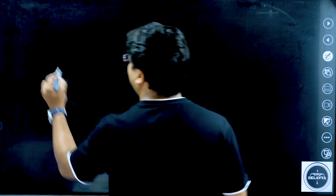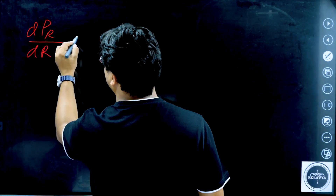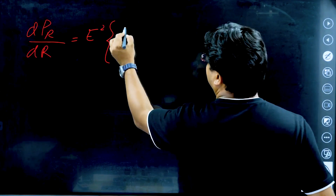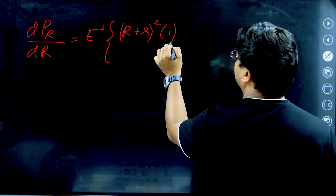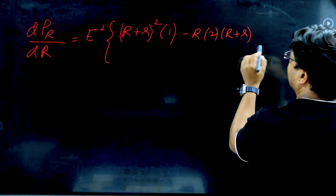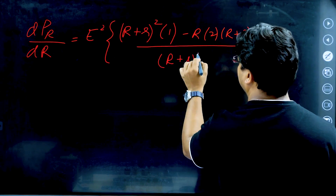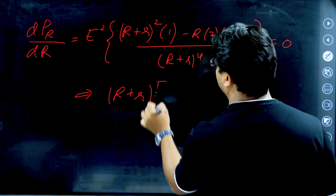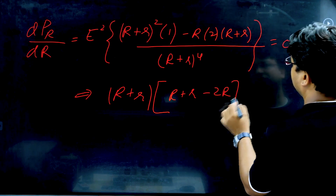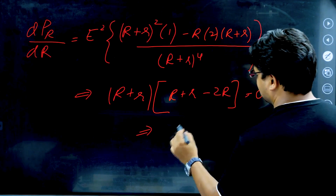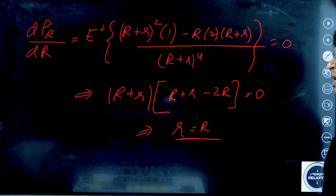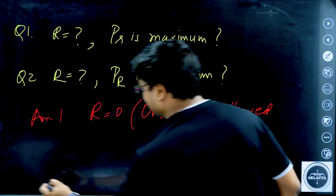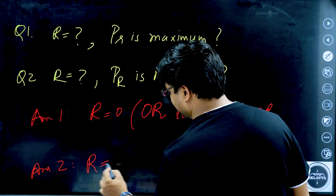For P_R, since capital R is in both numerator and denominator, we resort to calculus. Taking dP_R/dR and equating it to zero: E² × [denominator × d(numerator)/dR − numerator × d(denominator)/dR] / (denominator)² = 0. Solving this gives: (r + R) − 2R = 0, which means small r equals capital R. So maximum power in R occurs when R = r.